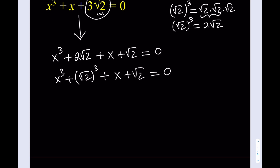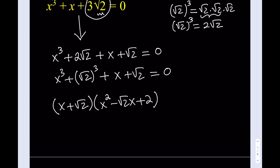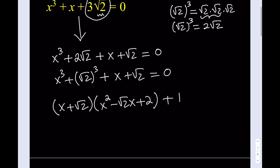Since this is a sum of two cubes, I can factor it. Let's write it as x plus root 2, multiplied by — the formula goes a plus b times a squared minus ab plus b squared. So it's going to be a squared minus ab plus b squared, which is 2. I can put a 1 in front so that I can make it factorable, because we're basically factoring this by grouping.